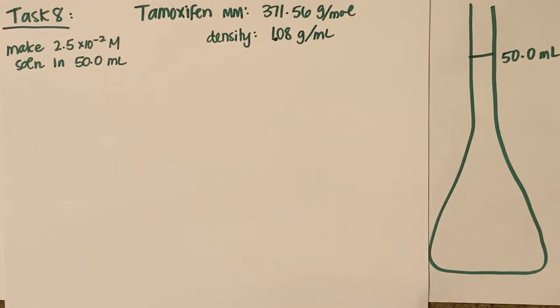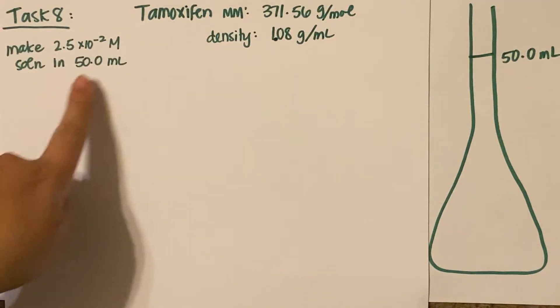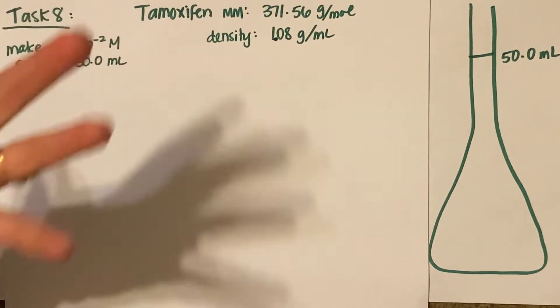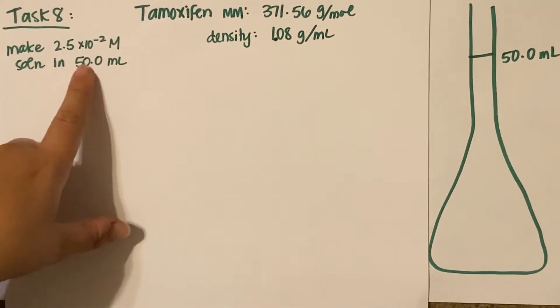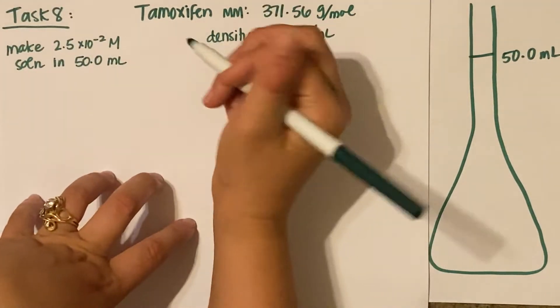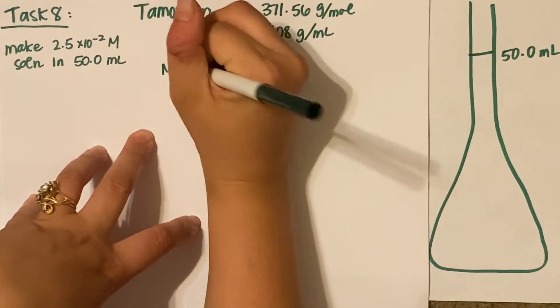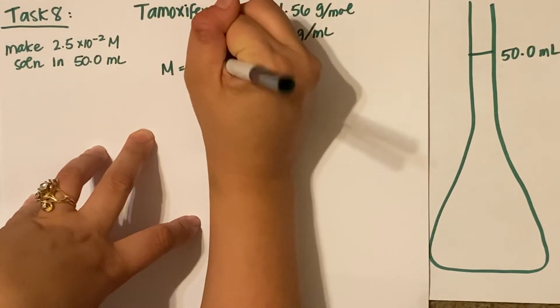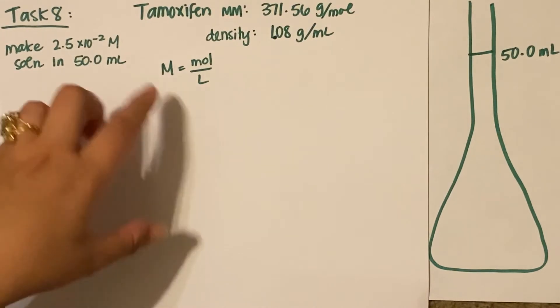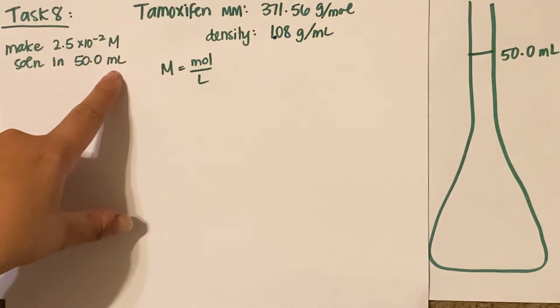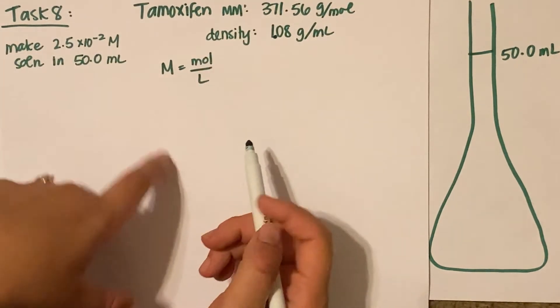What we do first is use this information in the question to figure out the number of moles. If you remember, molarity is moles divided by liters. So I have molarity and I have milliliters, so I just need to convert that to liters, and then I can solve for moles.